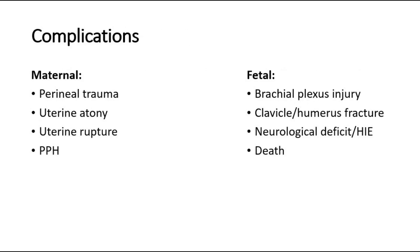The complications of shoulder dystocia include maternal complications such as perineal trauma, uterine atony causing postpartum hemorrhage, or uterine rupture. Fetal complications include brachial plexus injury, clavicle or humerus fracture, neurological deficit or hypoxic ischemic encephalopathy, and even death.